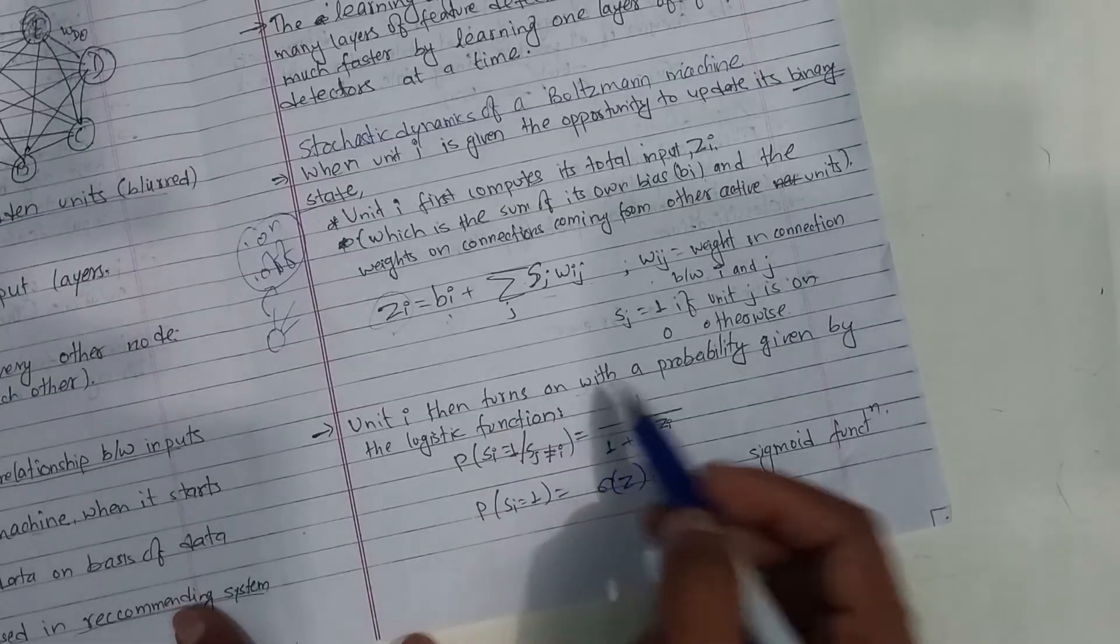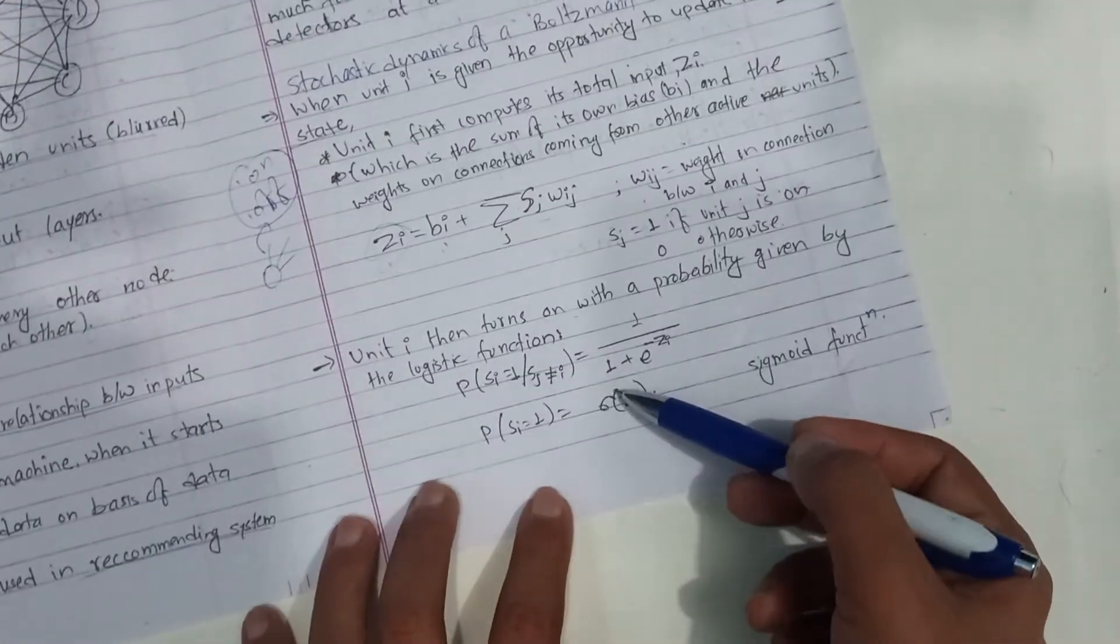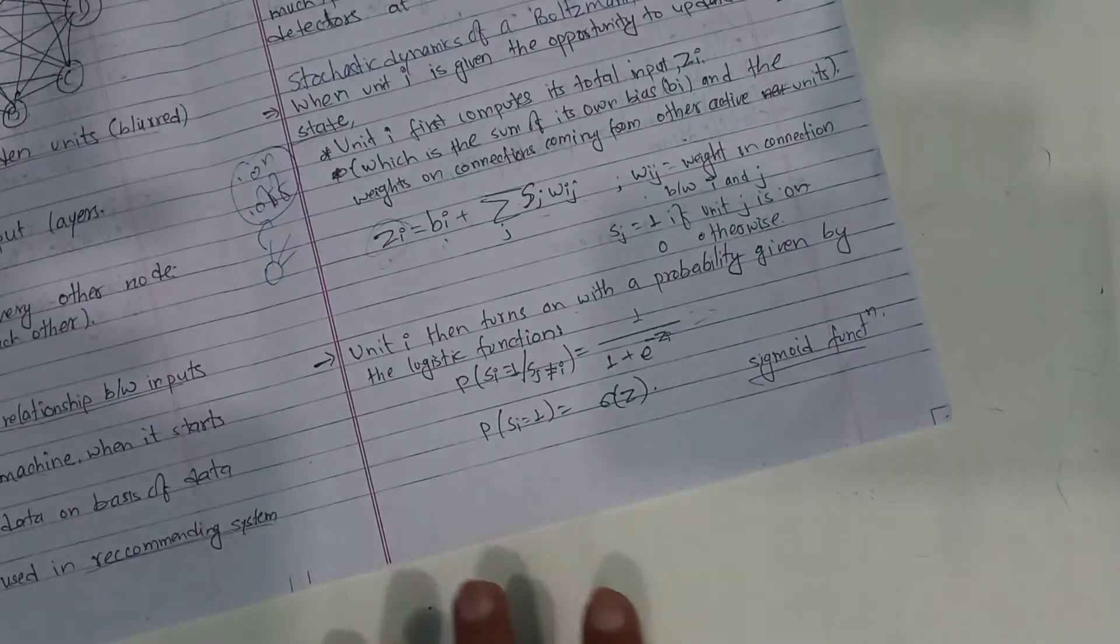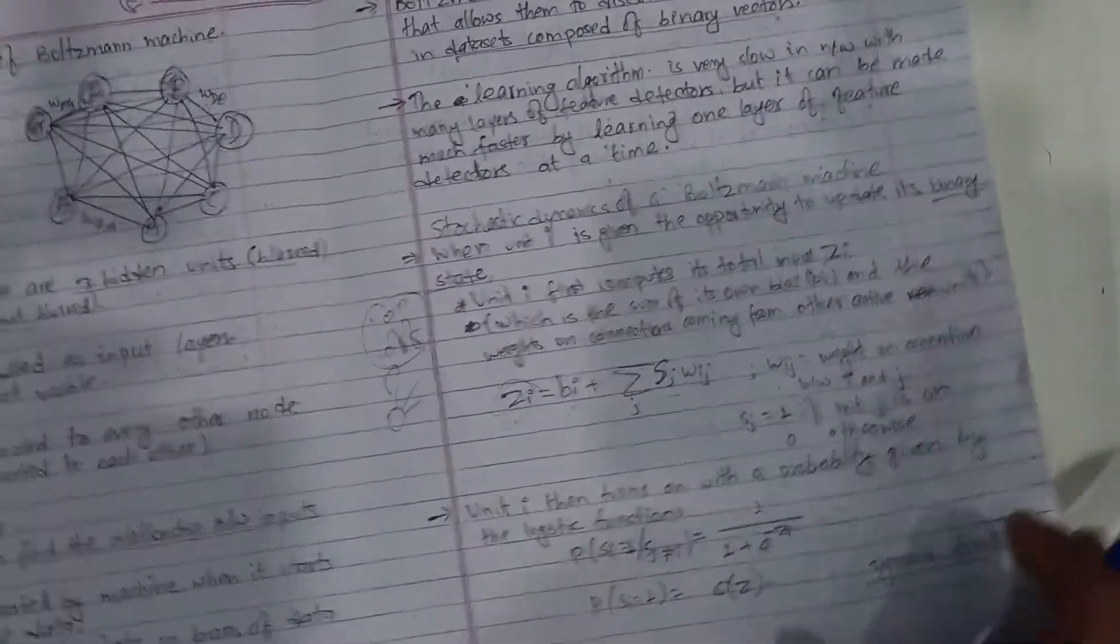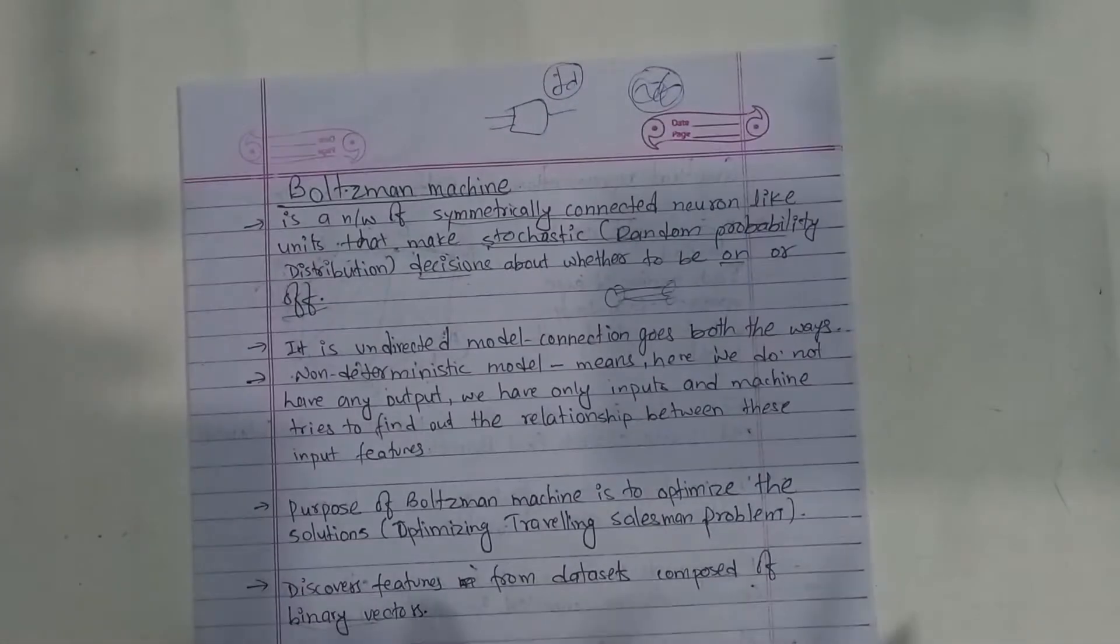Unit i then turns on with a probability given by this. This value is the sigma function. Sigma function is the same value. This is the probability. If you want to update it, this is all about Boltzmann machine.